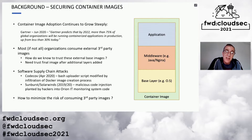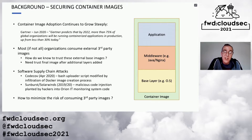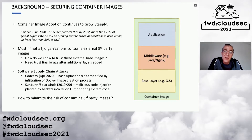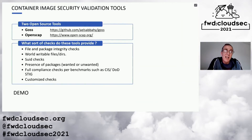Recently, there have been a spate of software supply chain attacks which have resulted in considerable reputational and financial difficulty for a number of organizations. In particular, the CodeCov case was an example whereby a Docker image creation pipeline was infiltrated and the Bash uploader script was modified so that when people ran it, sensitive credential information was uploaded to a third-party website. Another example is the Sunburst or SolarWinds attack. So how do we minimize the risk of consuming these third-party images? I'd like to talk about a couple of open source tools called GOSS and OpenSCAP, which can help with this.